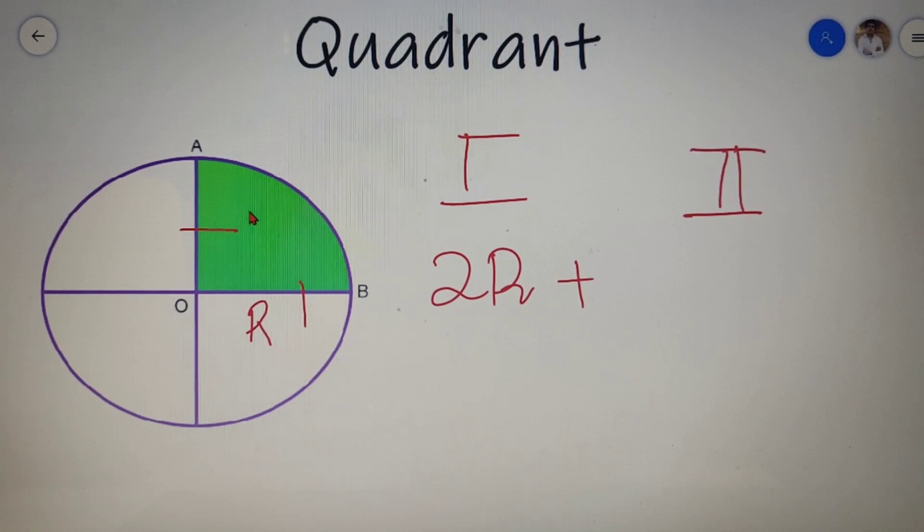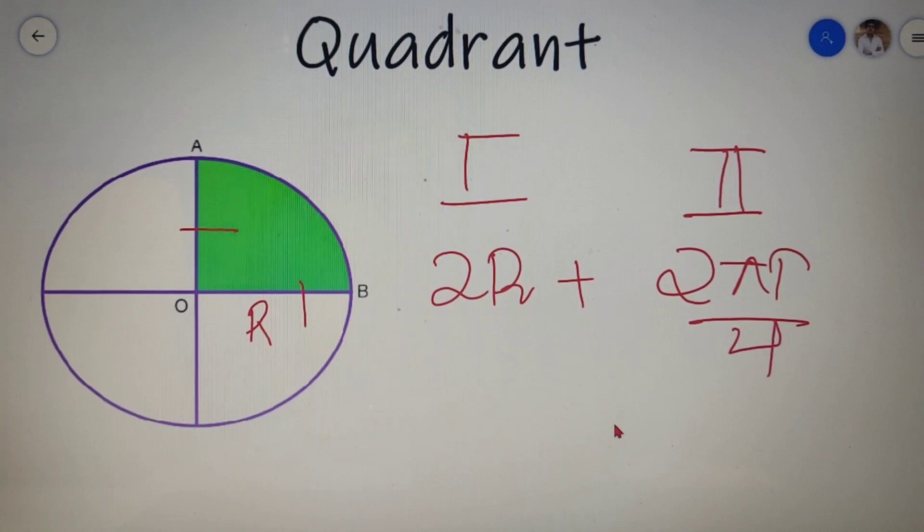Now for the second part, we have to calculate the length of the arc AB. For a complete circle, we know that the circumference is equal to 2πr, and we also know that the length of the arc AB is one-fourth of the circle. So we have to just divide it by 4. So the final value is equal to πr by 2.